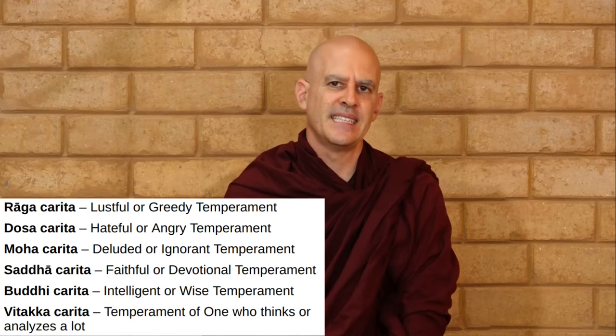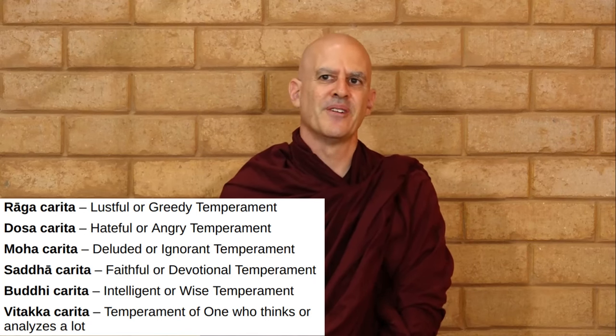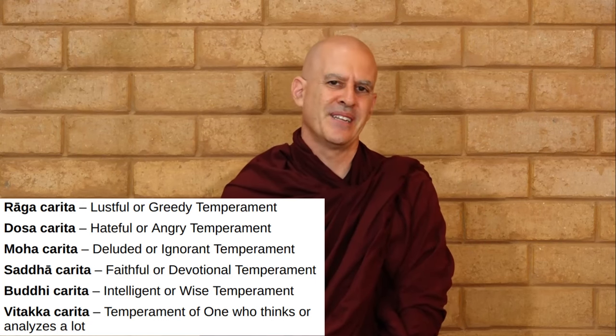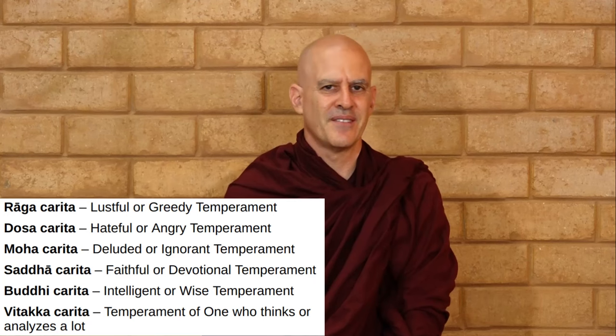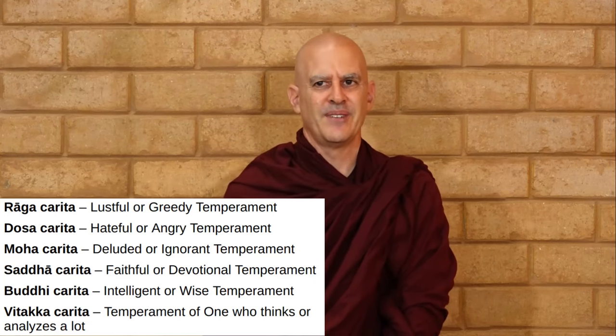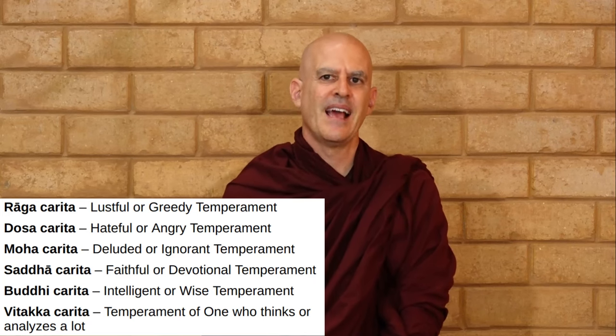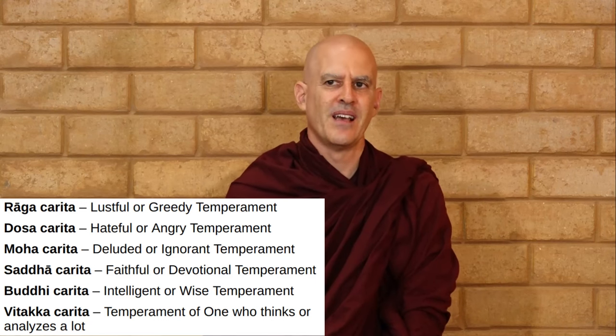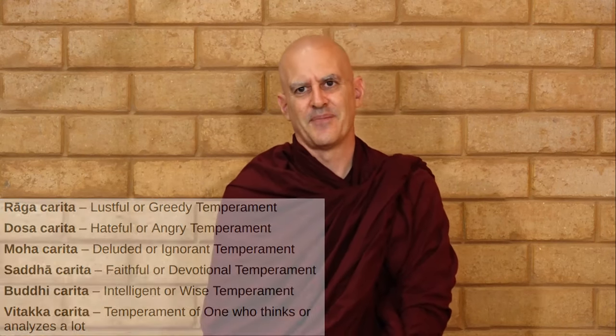Now you might be asking yourself: which meditation object is good for me? We have what we call the six charitas, or the temperaments. We're going to go over the six categories, which might be useful for you to label what your temperament is and then try to find an object most suitable for you. We have the raga-charita, which is the lustful or greedy temperament. We have the dosa-charita, which is the hateful or angry temperament. We have the moha-charita, which is the deluded or ignorant temperament. We have the sada-charita, which is the faithful or devotional temperament. We have the buddhi-charita, which is for the intelligent or wise temperament. And lastly we have the vithaka-charita, which is the temperament of one who thinks and analyzes a lot. We have objects that fit all of the temperaments.